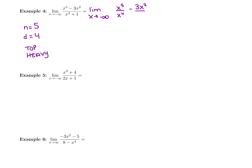Minus 3x squared divided by x to the fourth — the highest power in the denominator. In the bottom, we have x to the fourth divided by x to the fourth, and then plus 1 over x to the fourth. Every single term gets divided by x to the highest power in the denominator. Then we can simplify and cross out anything bottom-heavy because it's going to 0. In the top, x to the fifth divided by x to the fourth is just x.